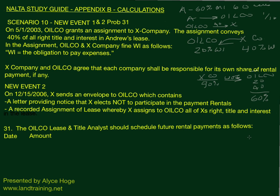The rental payments from December 15th, 2006 onward are going to be paid only by Oilco — Oilco is going to pay the full 60%. Remember Andrew had a 60% mineral interest in 60 acres, and the rental payment is $10 per net mineral acre.